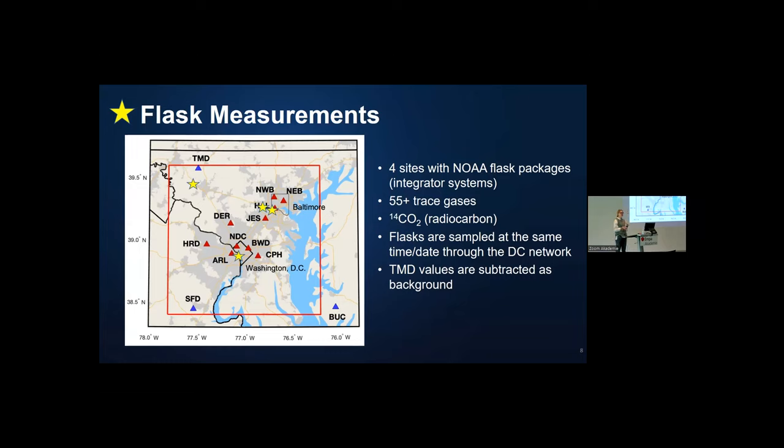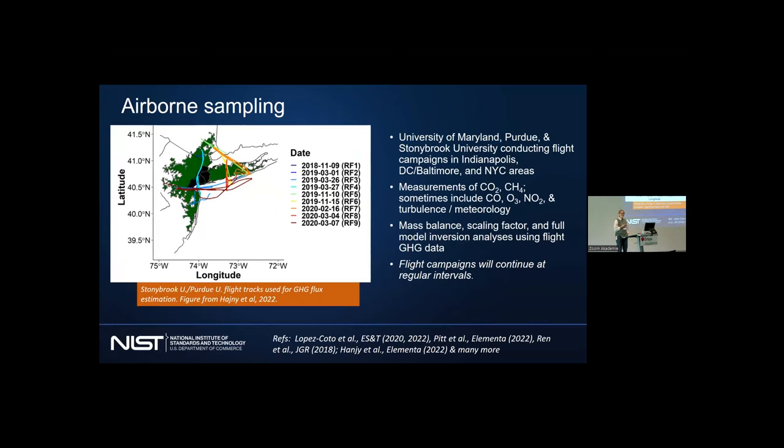We also take flask measurements. We have four different sites with NOAA flask packages, analyzing for 55 trace gases along with C14, which helps us distinguish the anthropogenic from the biogenic signals. Flasks are sampled at the same time and date through the DC network. TMD, located in the upper left corner, is our background site, and we use that to subtract off concentrations to get enhancements.